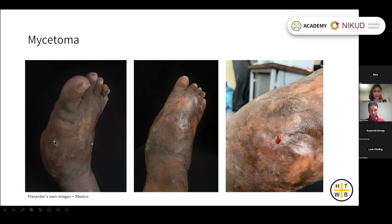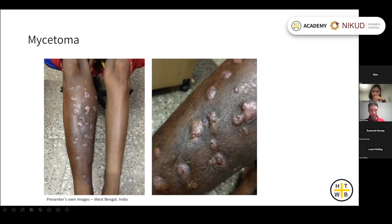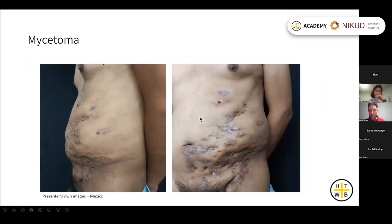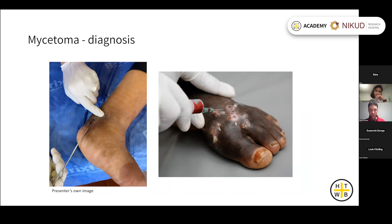These are pictures of mycetoma: subcutaneous swelling, sinus tracts with purulent discharge, and a small white grain coming out of a sinus tract. Another mycetoma of the lower leg shows subcutaneous swelling and nodules with sinus tracts. Similar clinical features appear on the shoulder, and a larger mycetoma on the abdomen — all sharing the same clinical features.